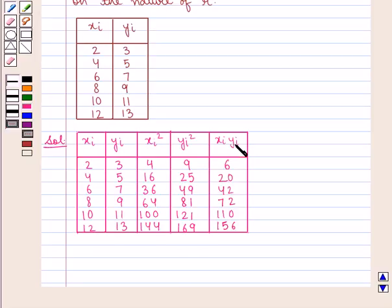And xi yi is given by 2 into 3 i.e. 6, 4 into 5, 20, 6 into 7, 42, 8 into 9, 72, 10 into 11, 110, 12 into 13, 156.